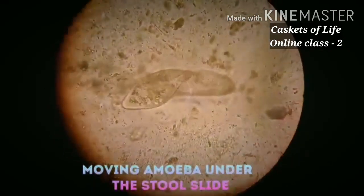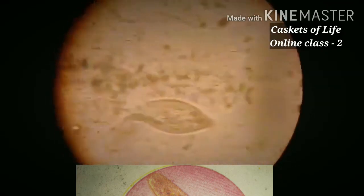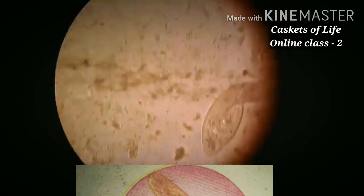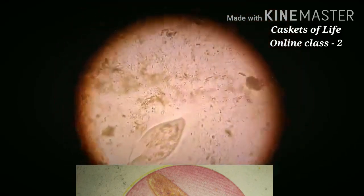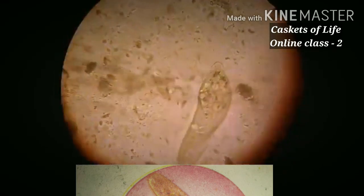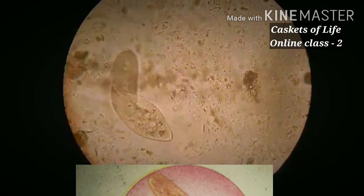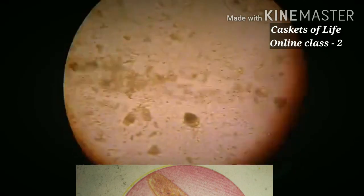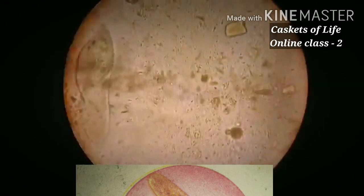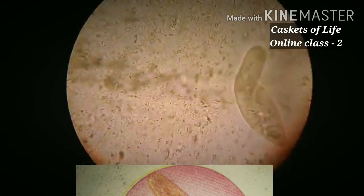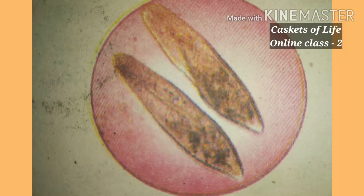This is a microscopic view of a paramecium. Its shape is just like the sole of a slipper, which is why it is also called a slipper animalcule.